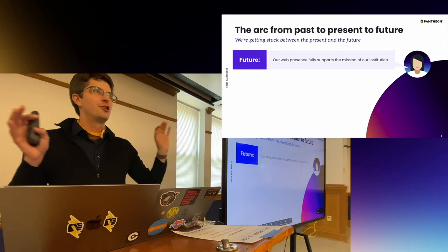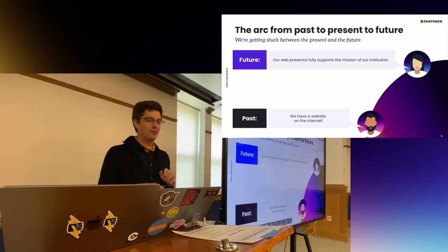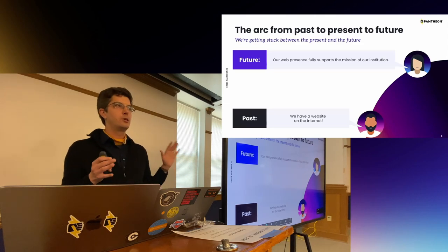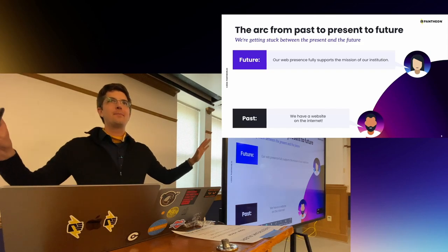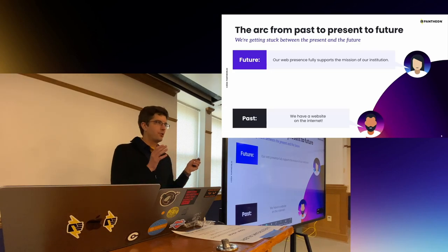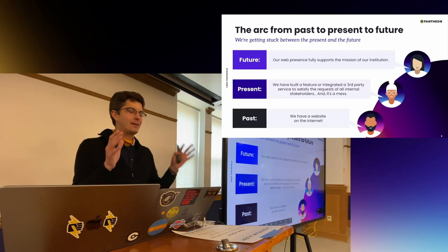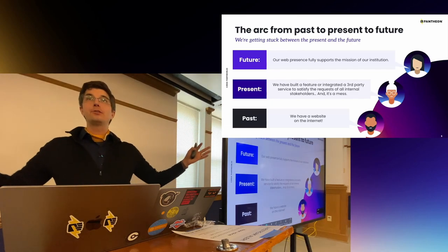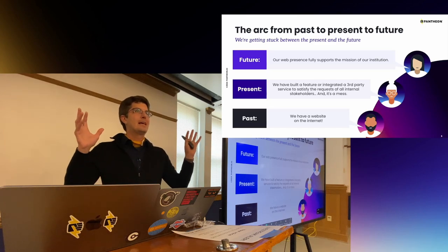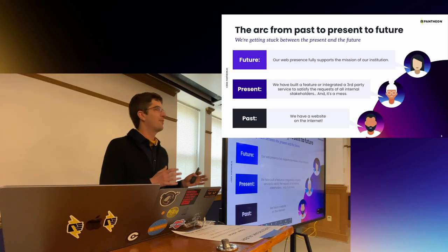Universities have such grand mission statements supporting all of humanity through knowledge and incredible things. We're coming from a past where higher education as an ecosystem was early to the web. In the 90s, just getting HTML onto the World Wide Web on your own .edu domain name was an amazing accomplishment. In the 30-ish years since then, we've gotten stuck in what I think is an ever-present present that's a bit messy. We could say we've built a feature or integrated a third-party service to satisfy all of the stakeholders' requests — and it's a mess. The present status quo isn't working well for anyone.